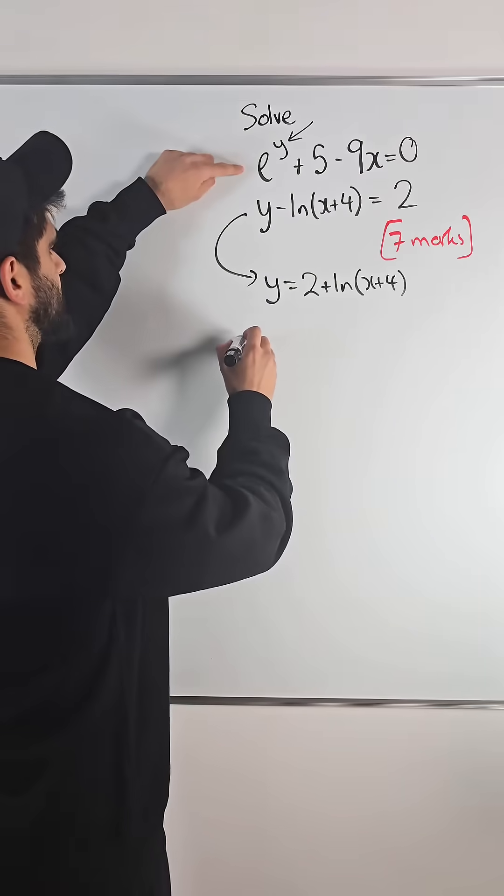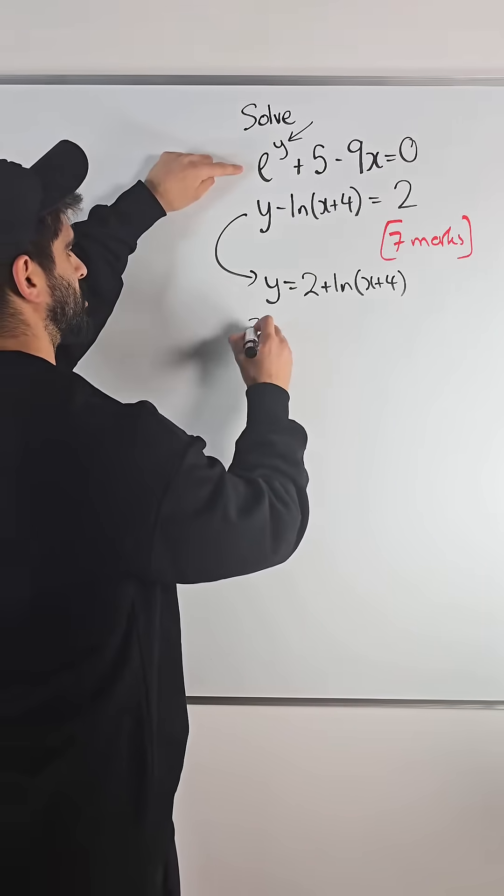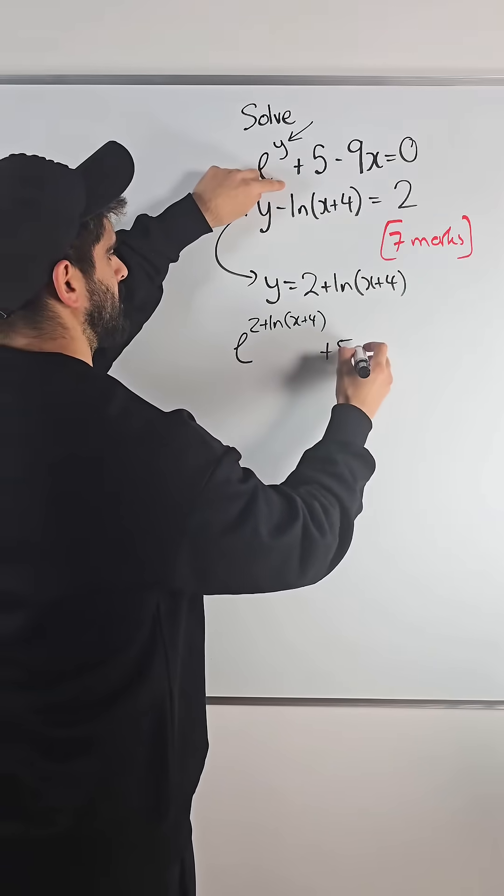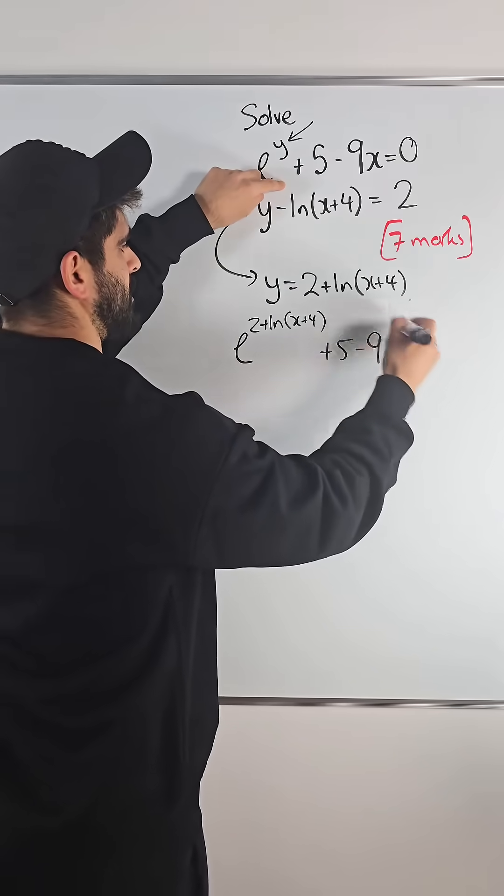So we get e to the power of y, which is 2 plus ln x plus 4, plus 5 minus 9x is 0.